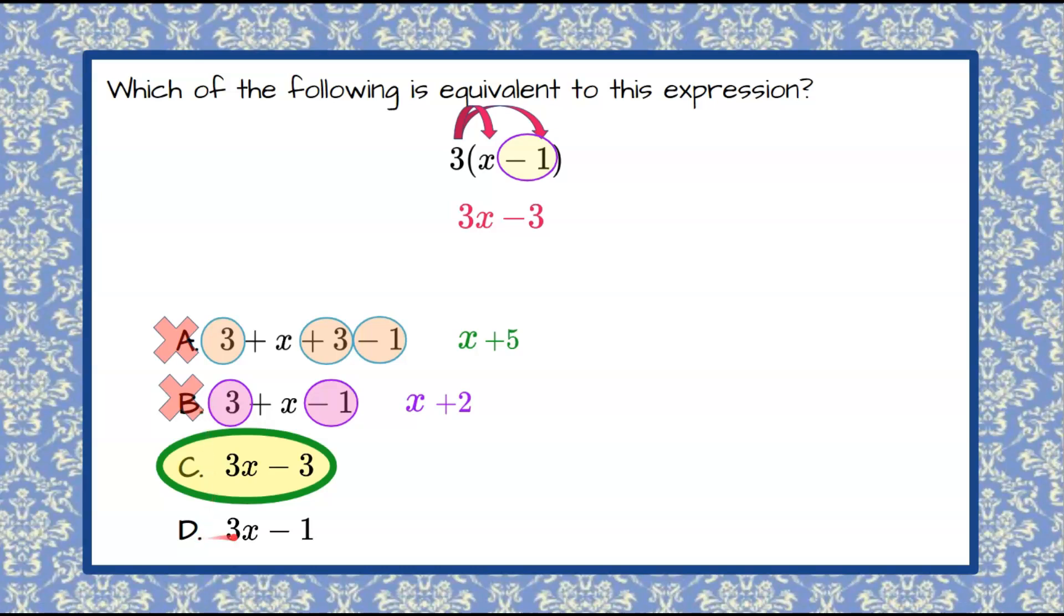Then we have choice D. 3x subtract 1 is in simplest form and we can see that the constant term in this expression negative 1 does not match our negative 3 and this is not an equivalent expression and we were right all along. It is indeed answer choice C. 3x subtract 3.